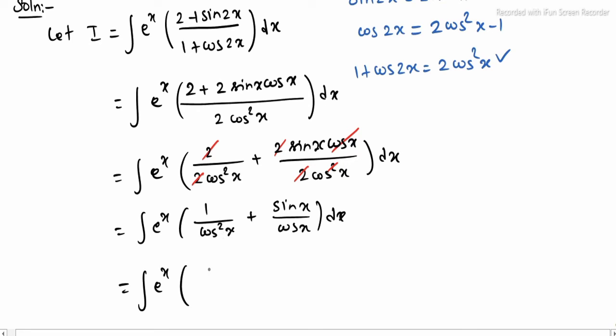1/cos² x can be written as sec² x. Sin x divided by cos x is tan x. So we have e^x(sec² x + tan x) dx.